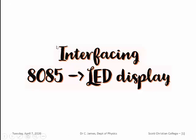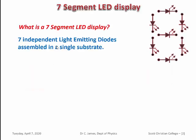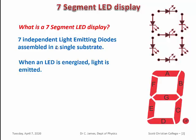Let us see what is an LED display. An LED display is nothing but 7 independent light emitting diodes assembled in a single frame, just like an 8 symbol with 2 boxes. These segments are named as A, B, C, D, E, F on the sides and G in the middle.